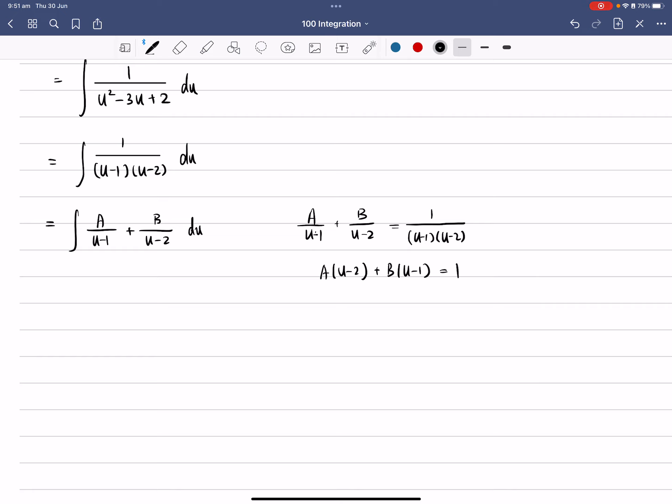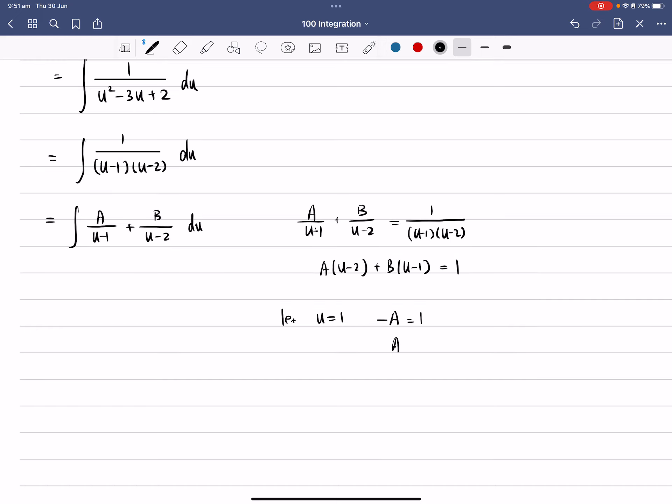Alright, so all we have to do now is by using some suitable substitution, like for example, let u equals to 1. So when I substitute u equals to 1 here, this entire term disappears. Alright, so if you substitute u equals to 1 there, that gives you -A equals to 1. So what is A equals to? So A should equal to -1 here.